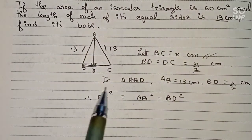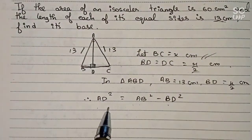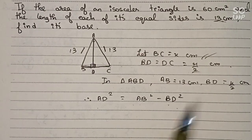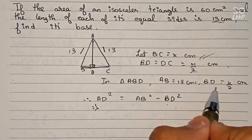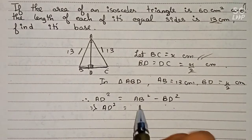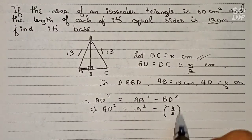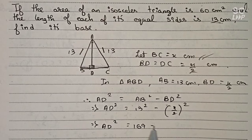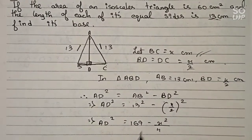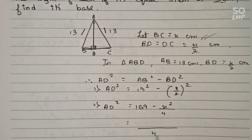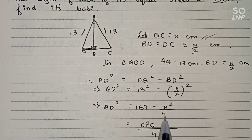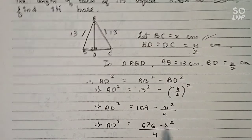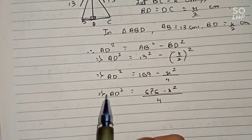Using the formula: height² = hypotenuse² − base², we substitute the values: AD² = 13² − (x/2)² = 169 − x²/4. Taking 4 as the common denominator: AD² = (676 − x²) / 4.